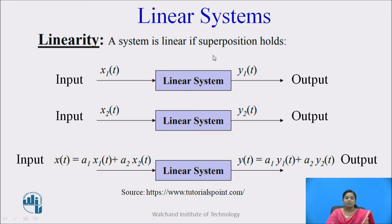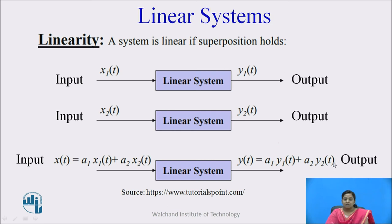Next is a linear system. A system is linear if it obeys the principle of superposition. If the arbitrary input x1(t) produces output y1(t), and input x2(t) produces output y2(t), then if x(t) = a1·x1(t) + a2·x2(t) results in y(t) = a1·y1(t) + a2·y2(t), we say that system is a linear system, where a1 and a2 are constants.